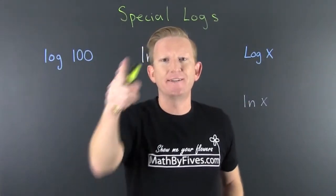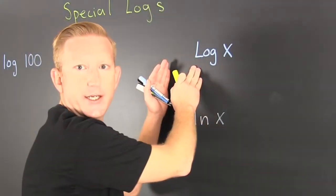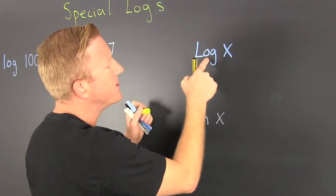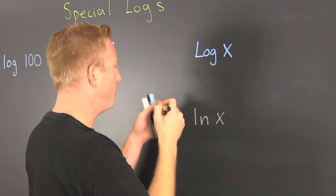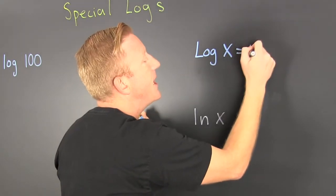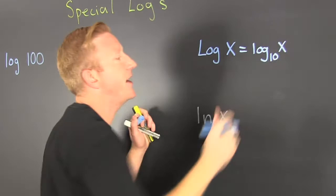Let's talk about some special logs. I've got some special logs for you. The common log: when there is no base written, the base is assumed to be a 10. That's the log base 10 of x. This is the common log in our base 10 system.